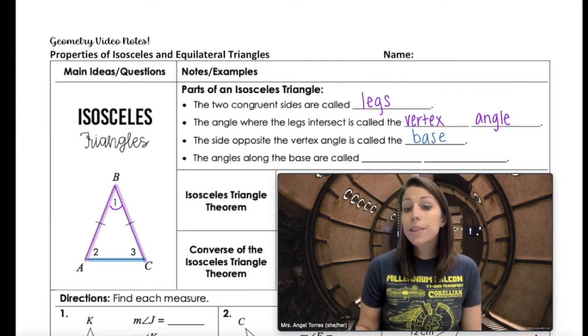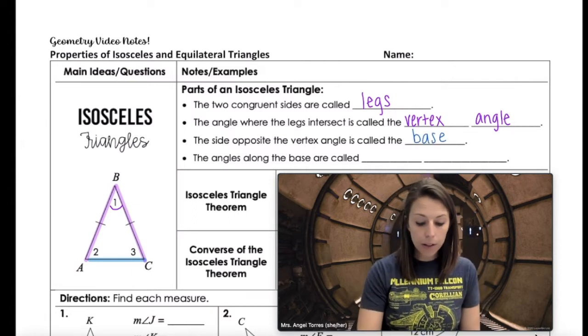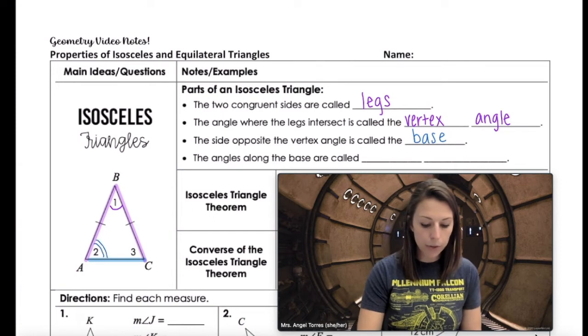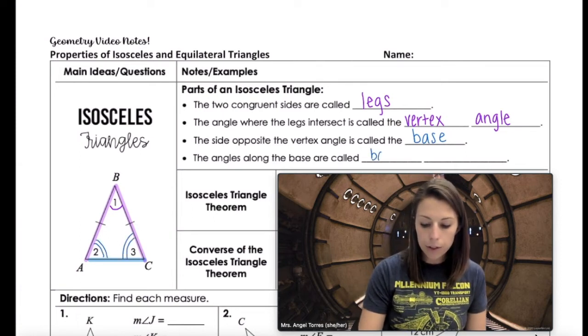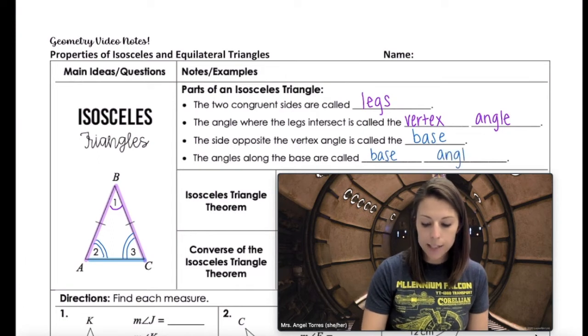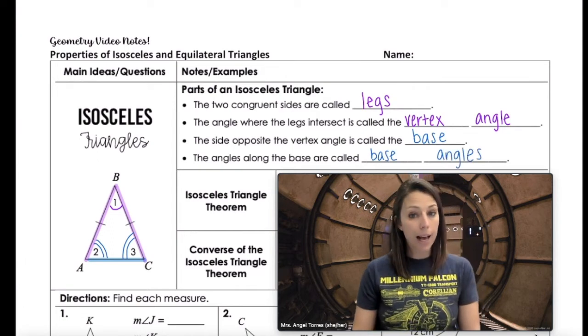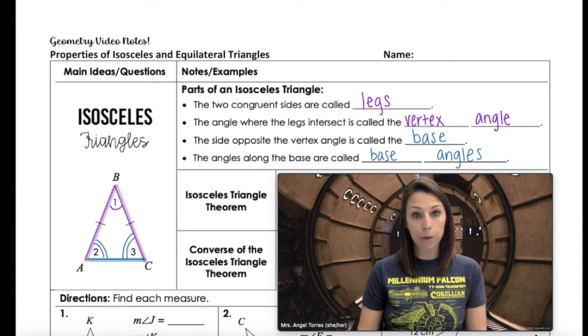The side opposite the vertex angle — the side that is not congruent to the other two — is called the base. The two angles along the base, which in this case are angle two and angle three, are called the base angles. It's important to know this vocabulary as we move through.